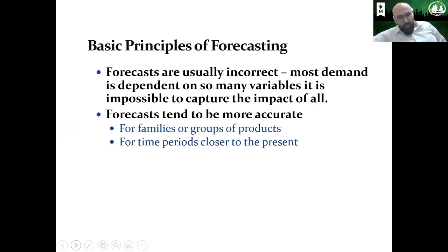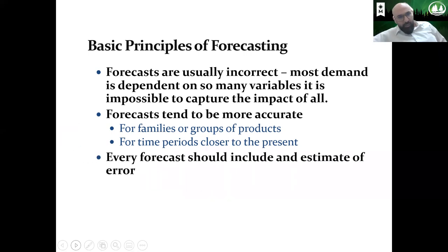The forecasting is inaccurate. But we're going to have more accurate forecasting if we're using families or groups of products. Also, if we have a time period that's closer to the present — if you predict the next week, that would be more accurate than predicting a year from today. So the longer the period, the more inaccurate the forecasting; the shorter the period, the closer to the present, and the more accurate the forecasting.